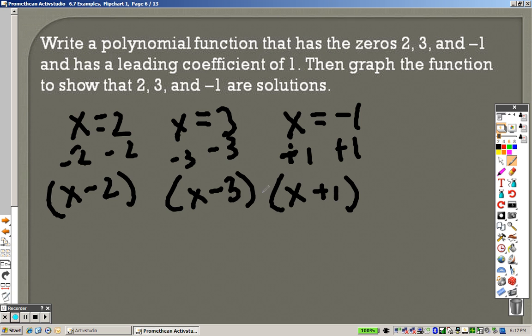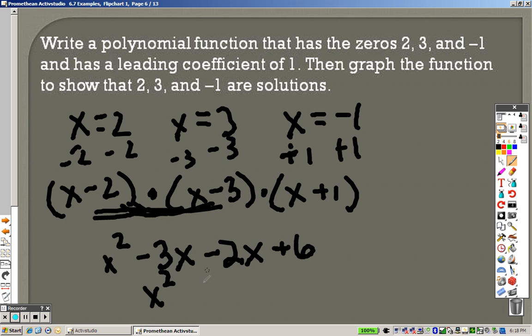And now, let's FOIL these bad boys. So x times x is x squared. x times negative 3 is negative 3x. Negative 2 times x is negative 2x. Negative 2 times negative 3 is positive 6. When I combine those together, I get x squared. Those are negative 5x when I put them together. And a positive 6.